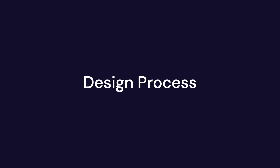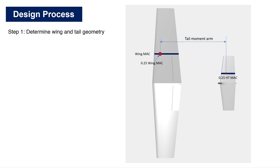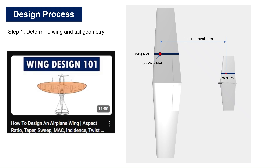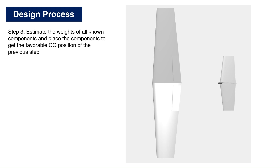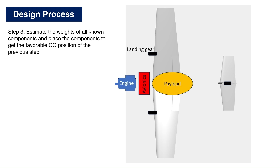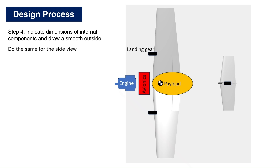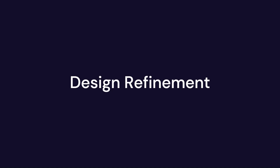Now we will look at a simplified design process to design a fuselage. First, determine the geometry of the wing and horizontal and vertical tails. This gives us the relative placement of the wing and tails to get the tail moment arm for sufficient stability and control. For wing design, you can watch the previous video for more information. For tail design, we can use the tail volume coefficient method. Next, indicate the desired CG position and CG envelope on the center line — this is based on the desired static margin. Then, estimate the weight of all known components and place them to get the favorable CG position. Once the CG is in a satisfactory location, indicate the dimensions of the components on the diagram. Now, trace a basic fuselage that encloses all the internal components, keeping in mind aerodynamics and aesthetics. This gives us the basic fuselage shape that can now be refined.